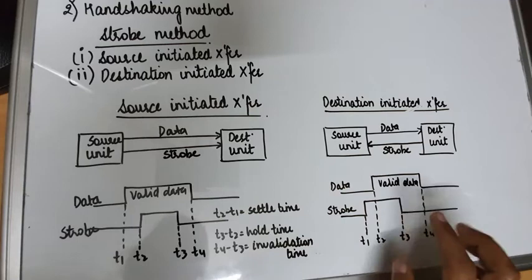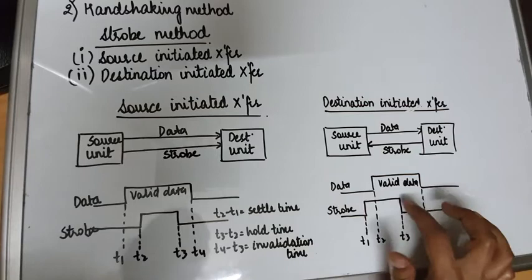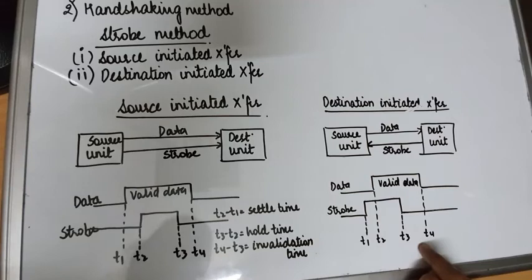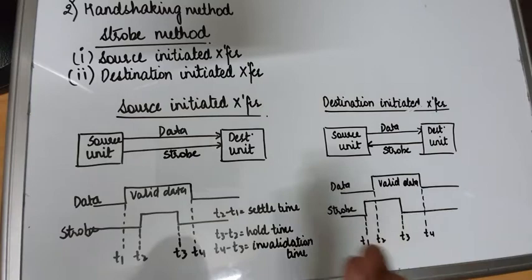At time t3, when the destination unit has read the data, it will disable the strobe signal. Since the destination unit generated the strobe signal, it is the one that disables it. Then at time t4, the interval t4 minus t3 is the invalidation time — the data on the data bus will be invalidated.